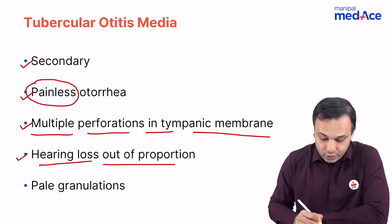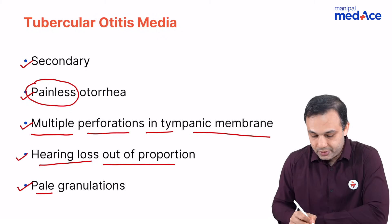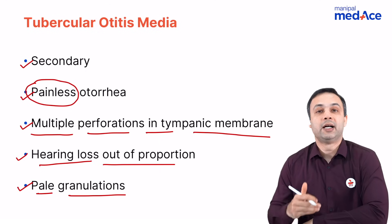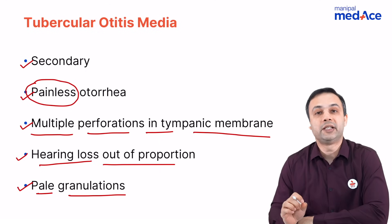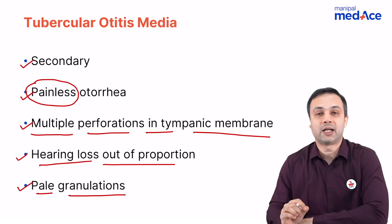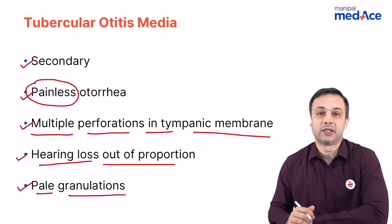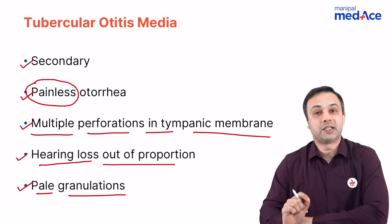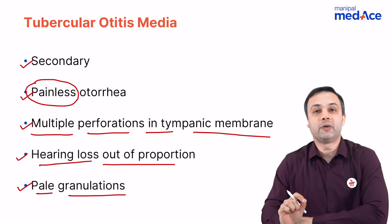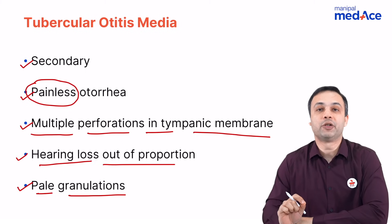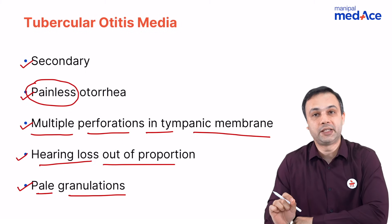Tuberculosis of the middle ear produces pale granulations, unlike CSOM atticoantral disease or an unsafe ear where there are red fleshy granulations. When you talk about tubercular otitis media, the diagnosis is always done with the help of a Gene Xpert test or a tubercular culture, and the treatment is always anti-tubercular therapy.